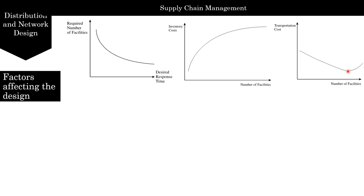Looking at transportation costs and number of facilities: inbound transportation costs are costs incurred in bringing material into a facility, and outbound transportation costs are the costs of sending material out. Outbound transportation costs per unit tend to be higher than inbound because inbound lot sizes are bigger — for example, an Amazon warehouse receives full truckloads of books inbound but ships out small packages with only a few books per customer. Increasing the number of warehouse locations decreases outbound distance to the customer and makes inbound transportation distance a smaller fraction of total distance traveled. Thus, as long as inbound transportation economies of scale are maintained, increasing the number of facilities decreases total transportation costs.